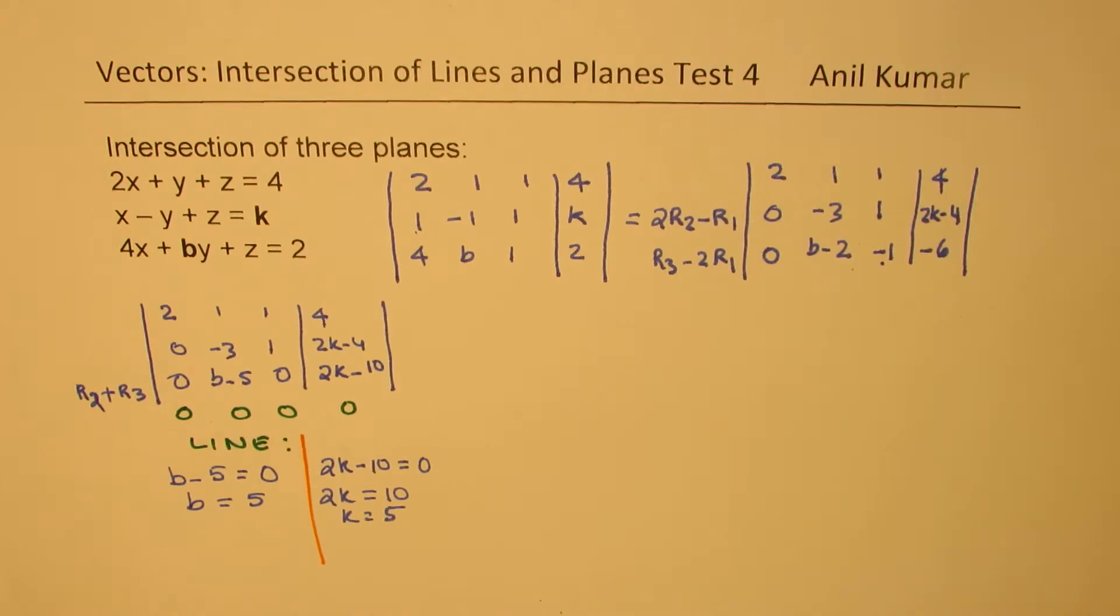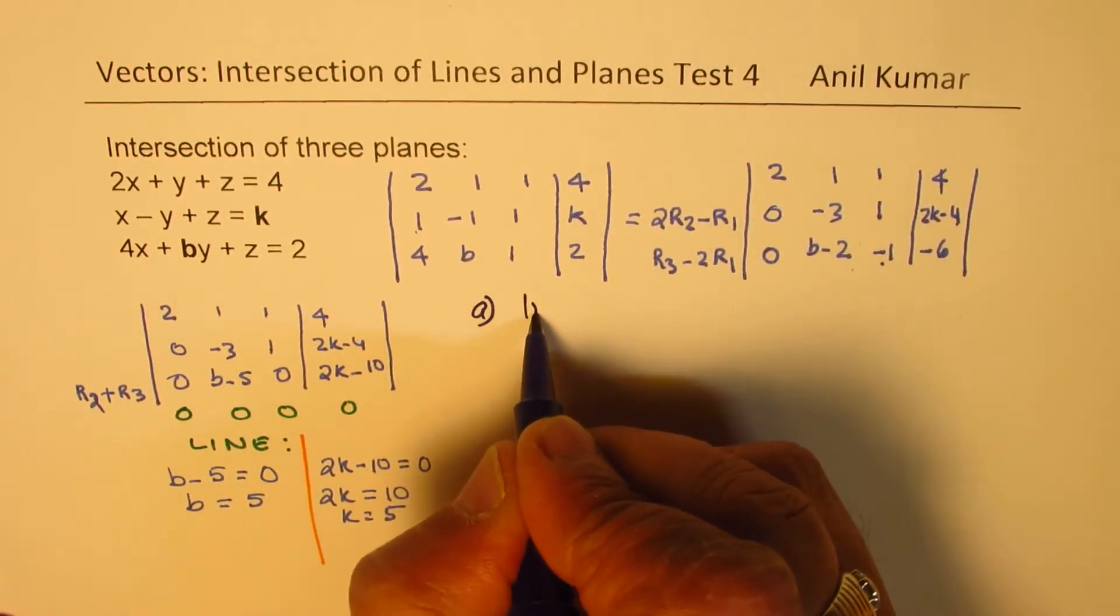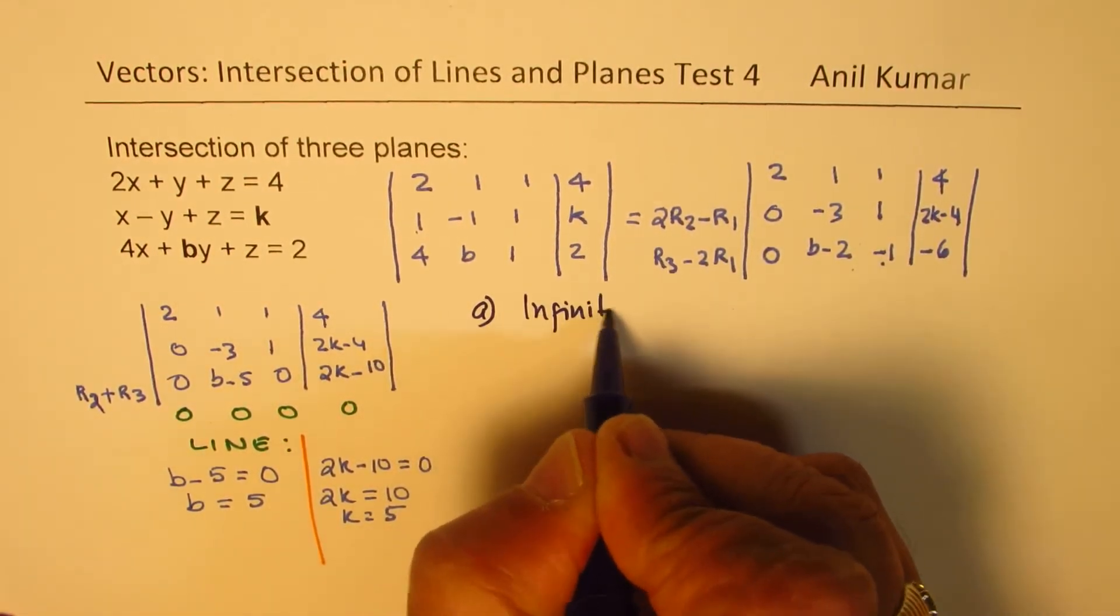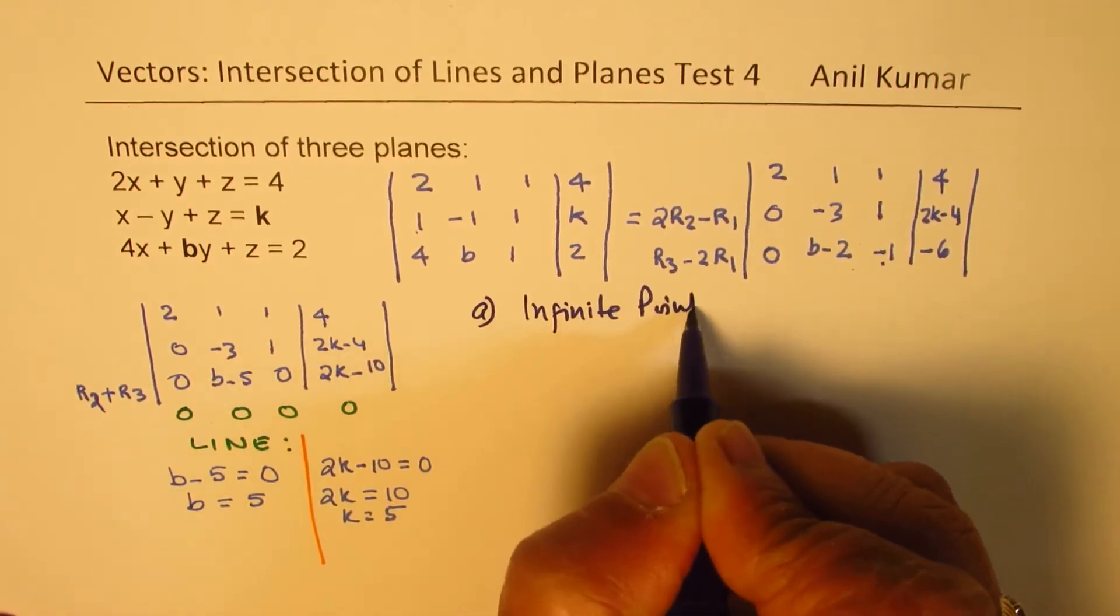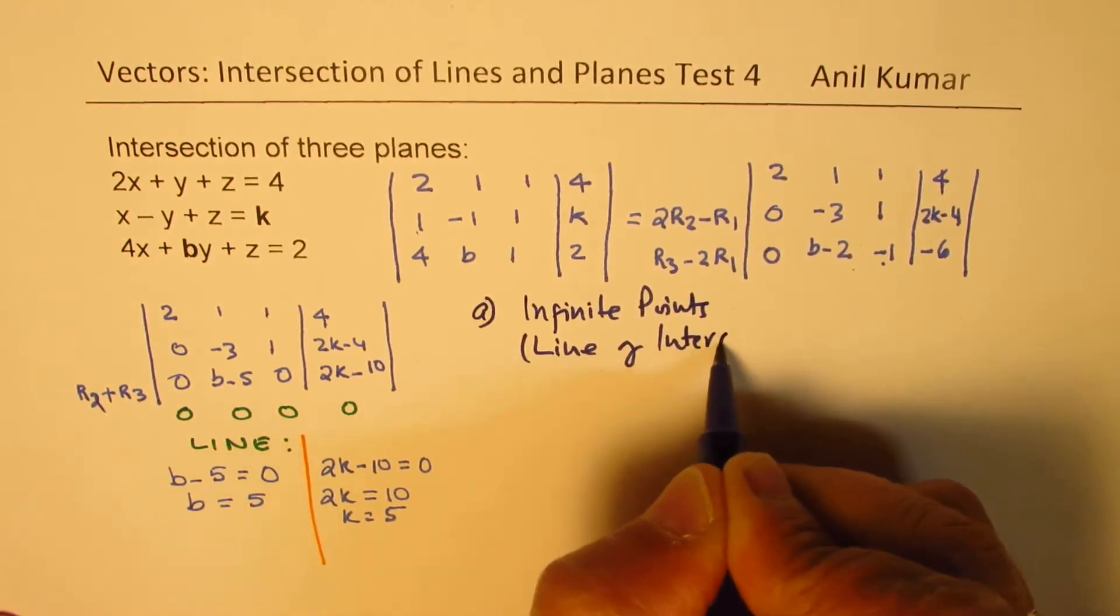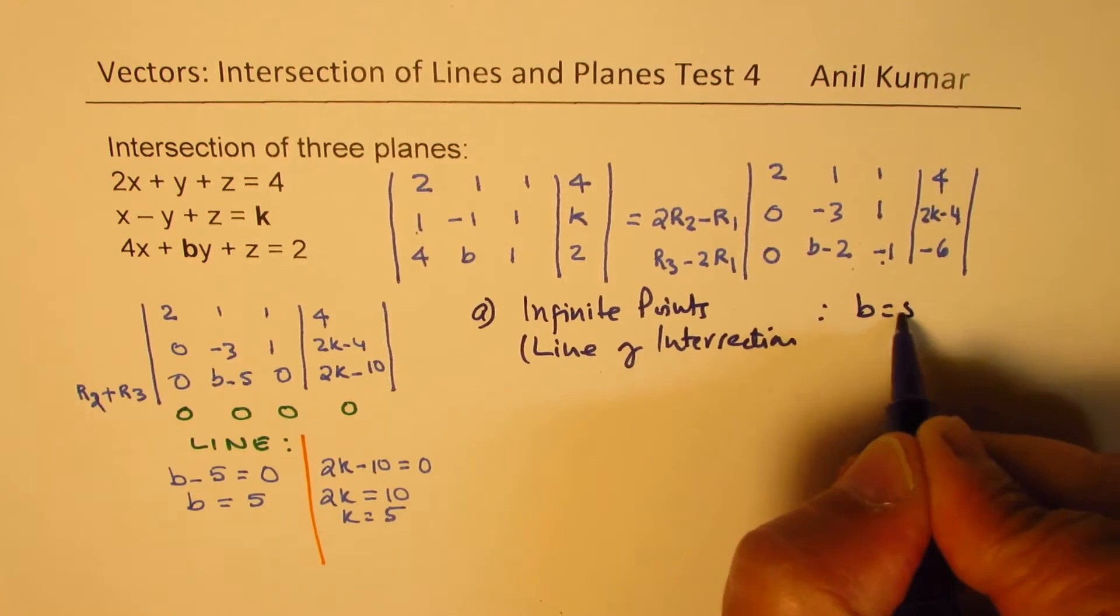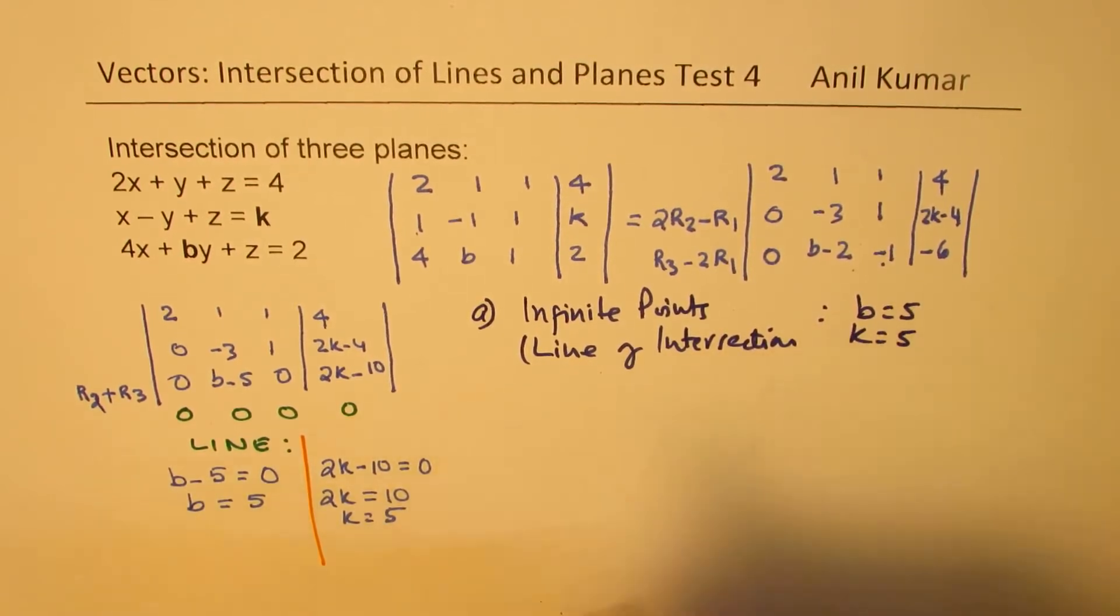So we get both values of b and k as 5 in this particular case. So for a line, we get our solution. Let me rewrite this here, that for case a, infinite points means a line of intersection, we get b equals to 5 and we get k equals to 5.